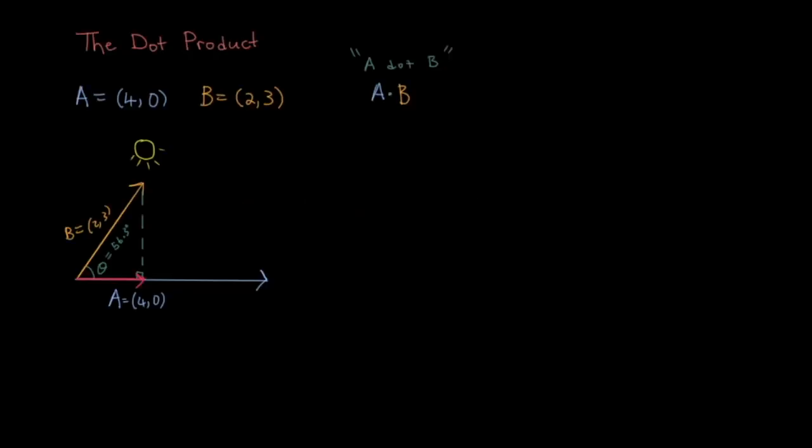But how do we put this visual representation into a mathematical formula? Well, we know that the magnitude of A is written as A enclosed in two upright bars. And we know from trigonometry that this component of B is written as the magnitude of B times cos θ. This gives us the other mathematical equation for the dot product.